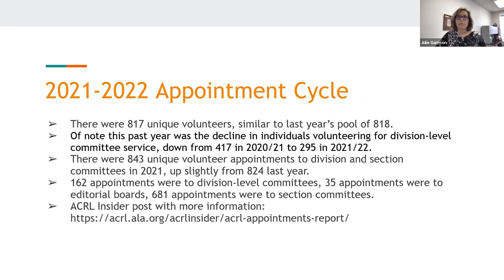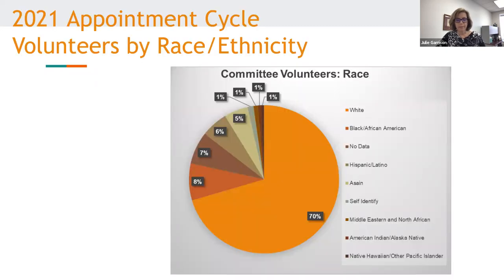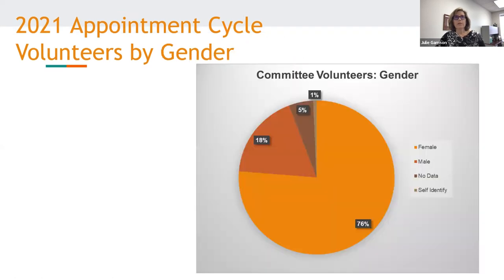The next two slides show the demographic breakdown of the 2021–22 volunteer pool — this is self-reported on the volunteer form and is information we've been collecting for about four years now. One slide shows breakdown by race and ethnicity, and the next shows volunteers by gender. I now hand it back to Rusty to share more about the process and go over the volunteer form.